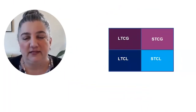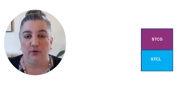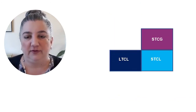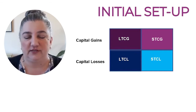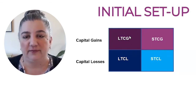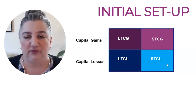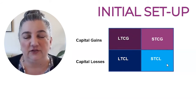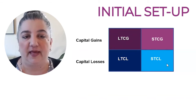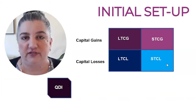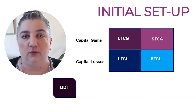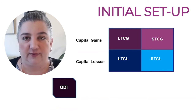Here's what I always recommend as an initial setup: a two-by-two table with capital gains across the top and capital losses across the bottom. So you have long-term capital gain, short-term capital gain, long-term capital loss, and short-term capital loss. Code Section 1(h)(11) talks about qualified dividend income, and that doesn't go in the grid — it goes off to the side because it's treated separately and is not taken into account when dealing with the limitation on capital losses.